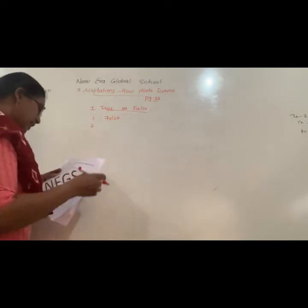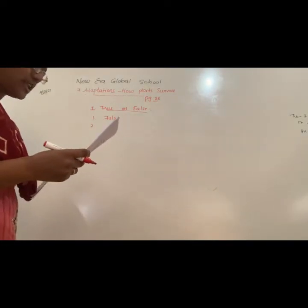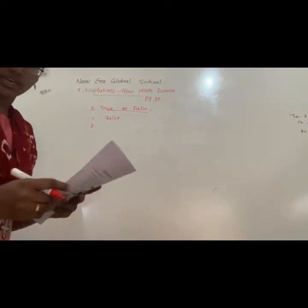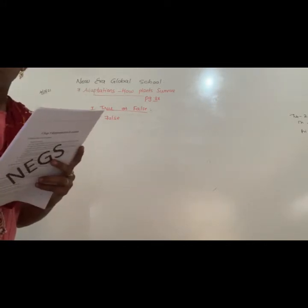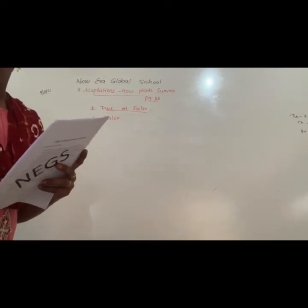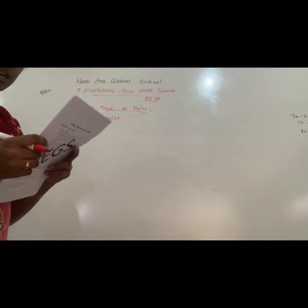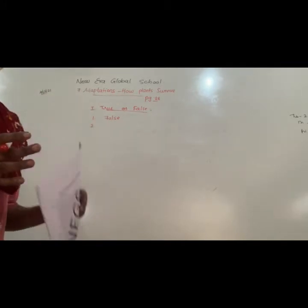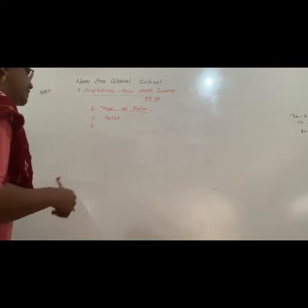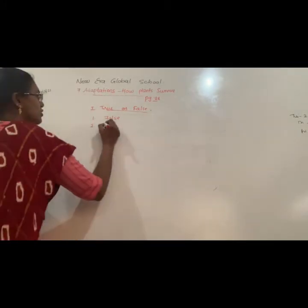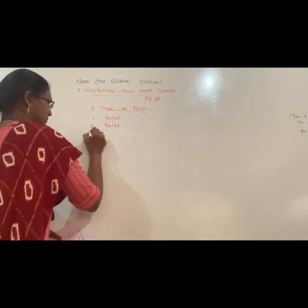Come to the second one: forests in hot and rainy areas have deciduous trees. Hot and rainy areas have evergreen trees, so the statement is false.